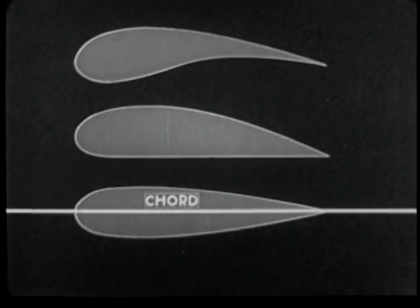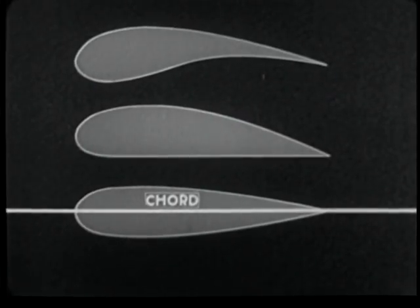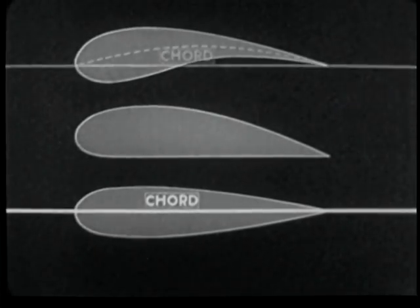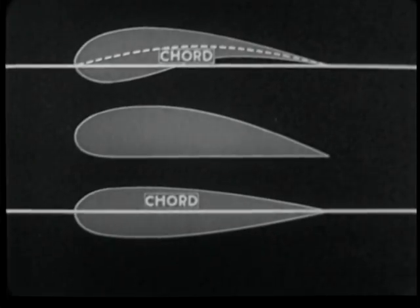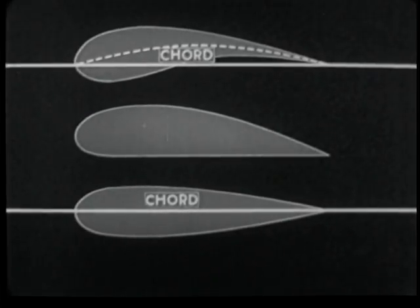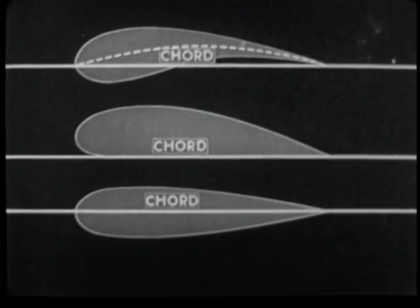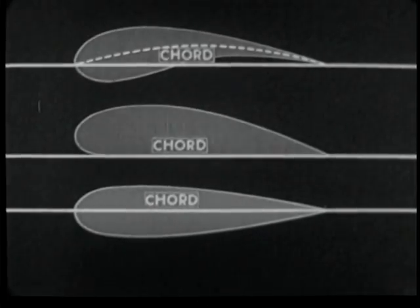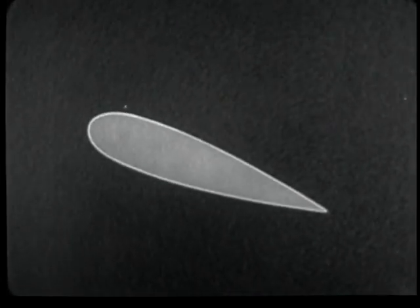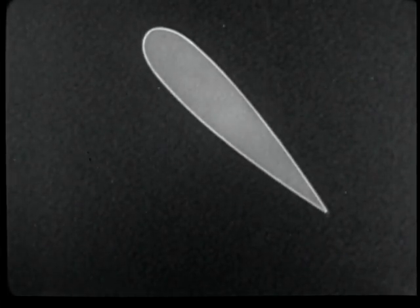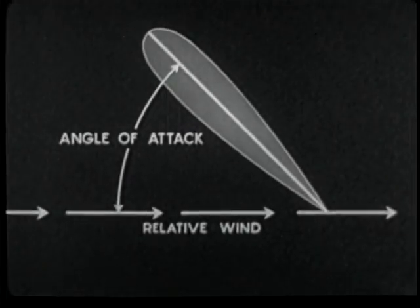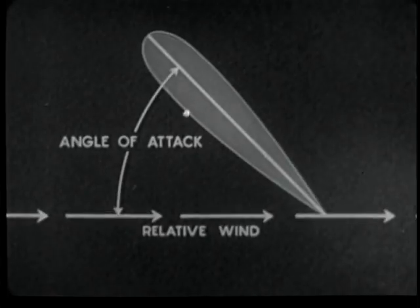In general, a line through an airfoil's leading and trailing edges is known as its chord. This is the case with an airfoil having a symmetrical double convex camber. In an airfoil which is convex on its upper surface and concave below, the chord corresponds to the arc of the medium camber. In other airfoils, it is the line of a straight edge brought into contact with the lower surface at two points. The acute angle between the chord of an airfoil and the relative wind is known as the angle of attack of the airfoil.